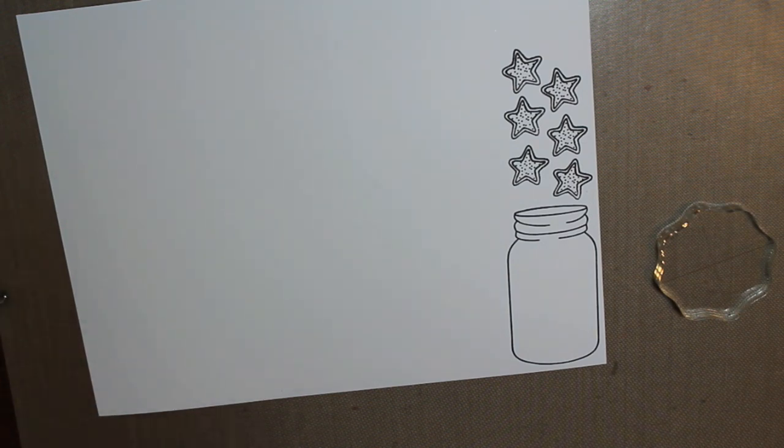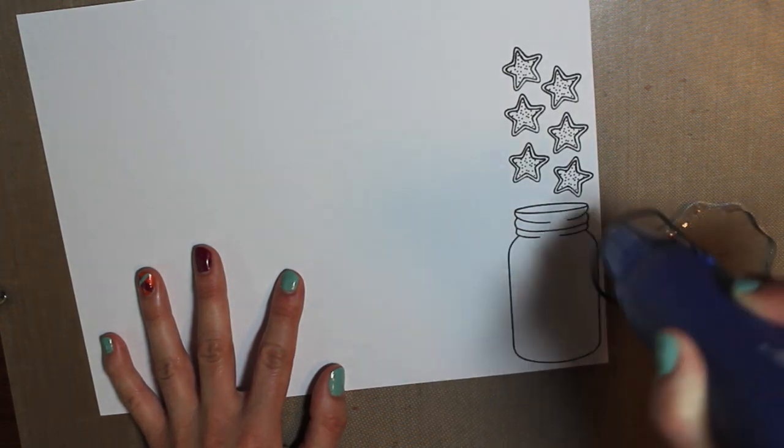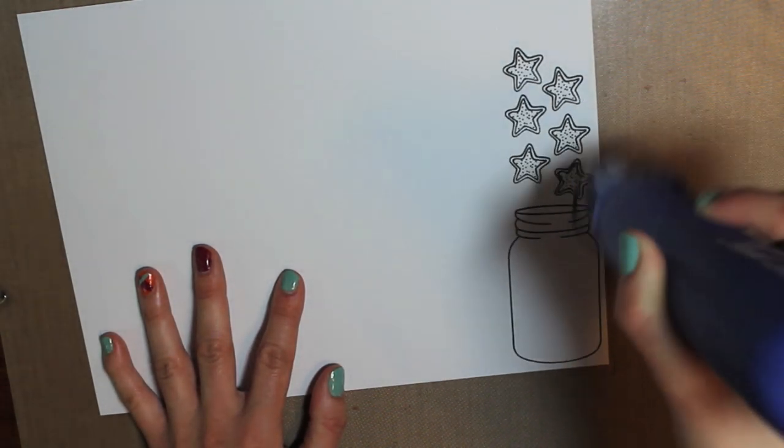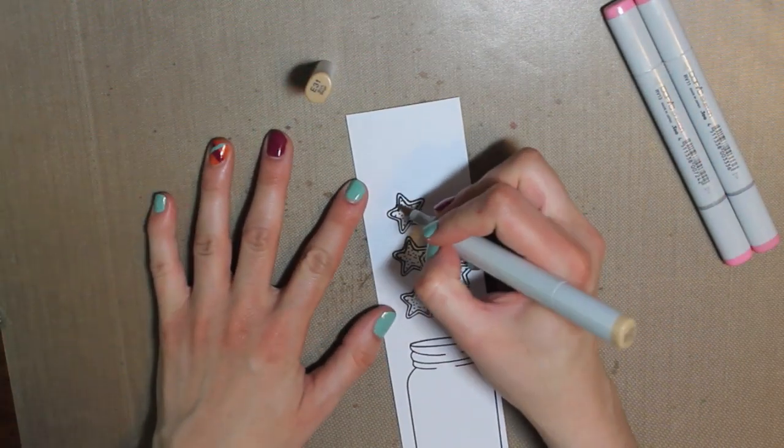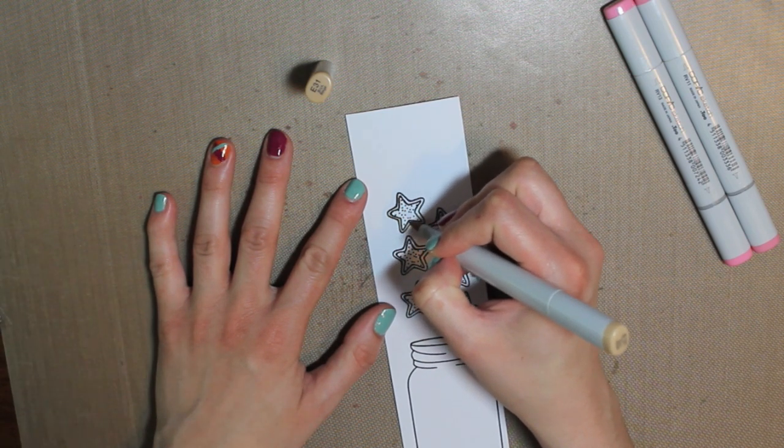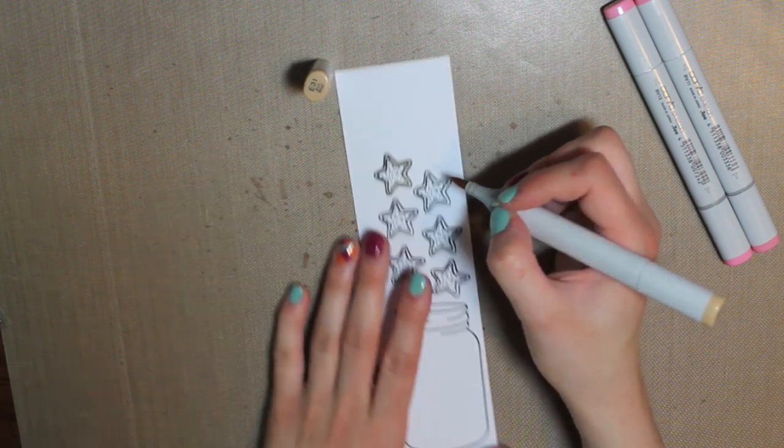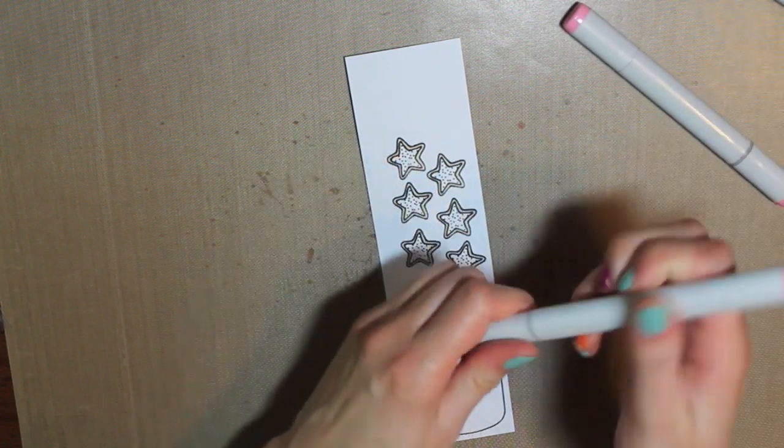Now I'm going to color those in with my Copic markers. So I'm going to first heat them with my heat tool just to make sure that all of the ink is dried. And then I can start coloring with my markers. So I'm going to start with the outline of the star with my E31. It's a light brown color. And I'm just going to color each of those star parts in.